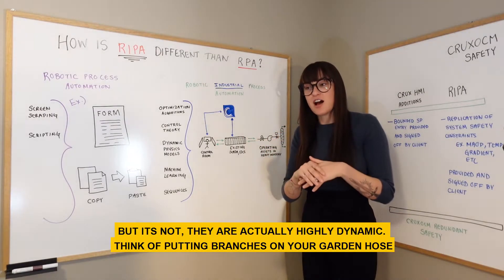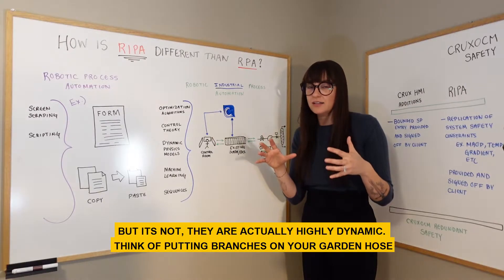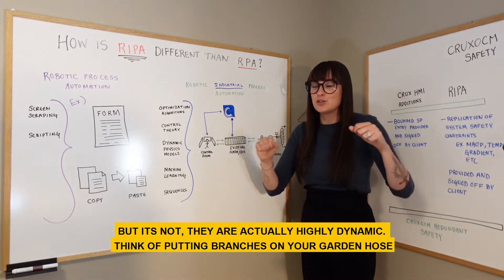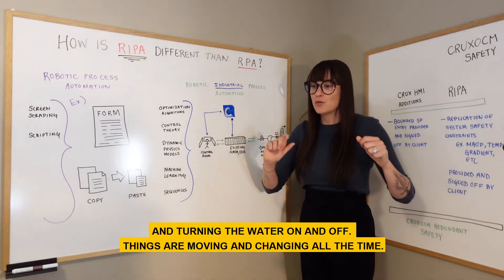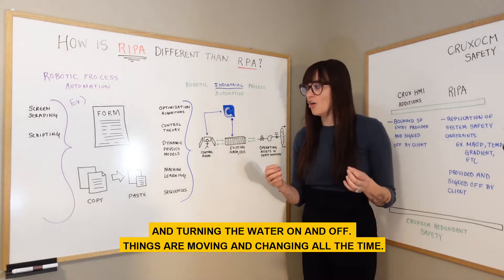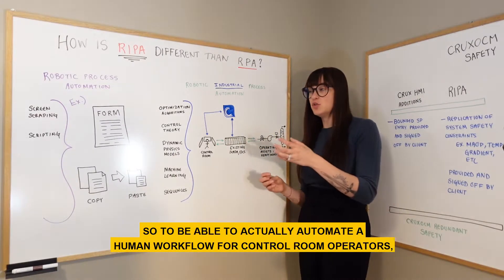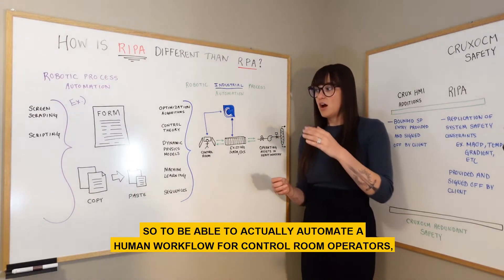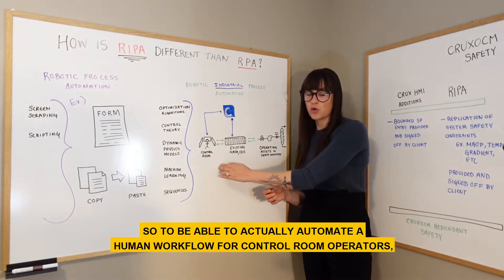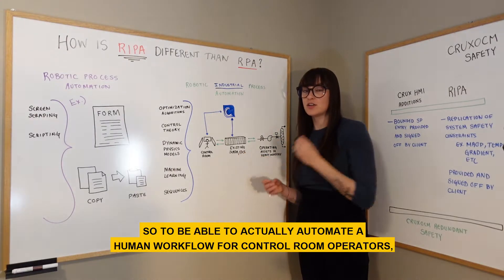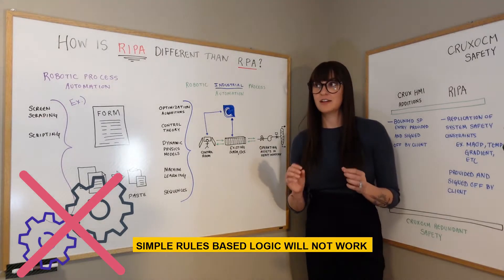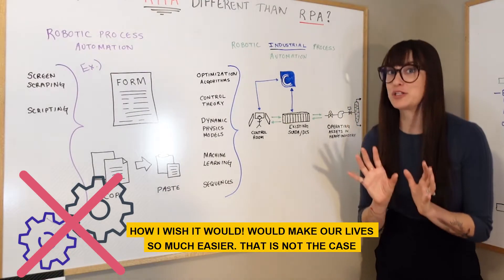People sometimes think these systems are just doing their own thing, but they're actually highly dynamic. Think about putting branches on your garden hose and turning the water on and off — things are moving and changing all the time. So to automate a human workflow for a control room operator, simple rules-based logic will not work.